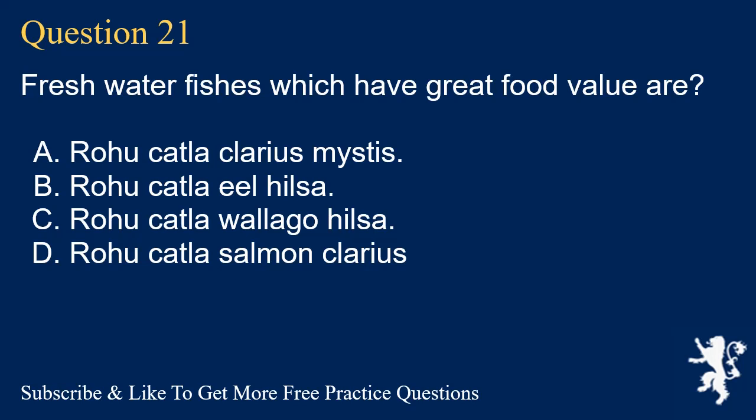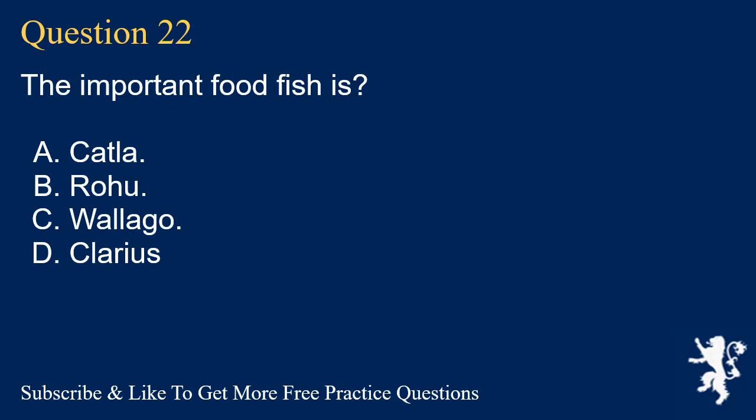Question 21. Fresh water fishes which are of great food value are? A. Rohu, catla, clarius, mistis. B. Rohu, catla, eel, hilsa. C. Rohu, catla, walego, hilsa. D. Rohu, catla, salmon, clarius. Answer: A. Rohu, catla, clarius, mistis.